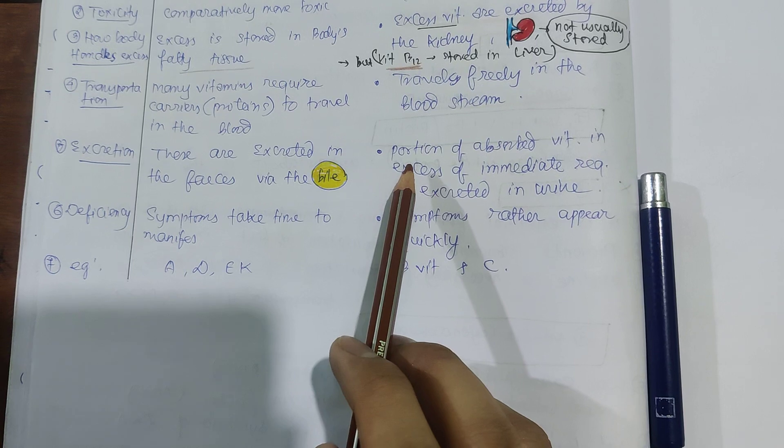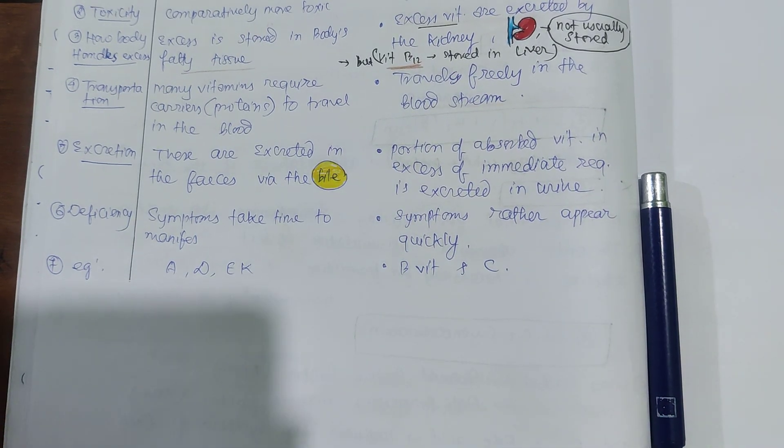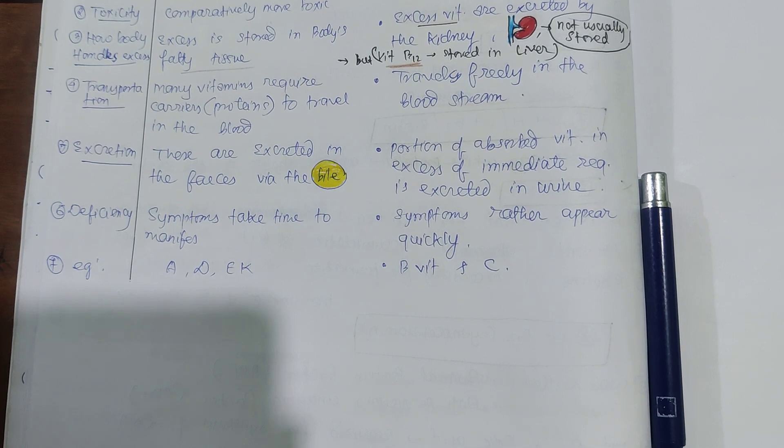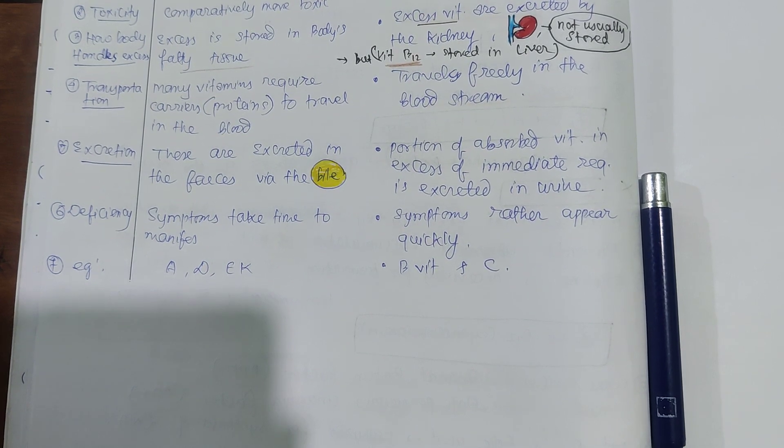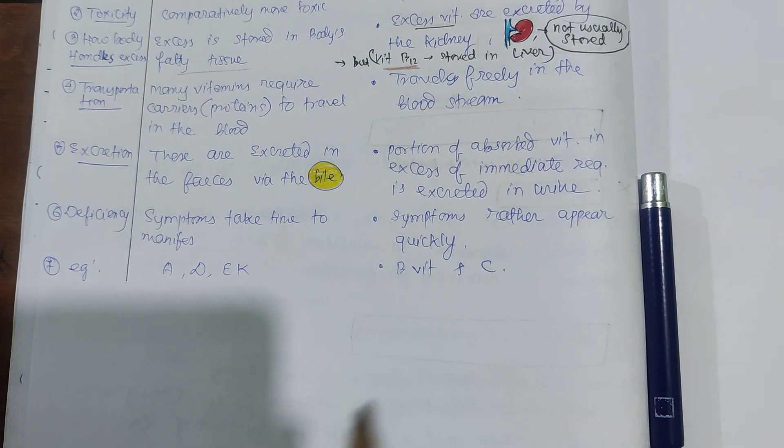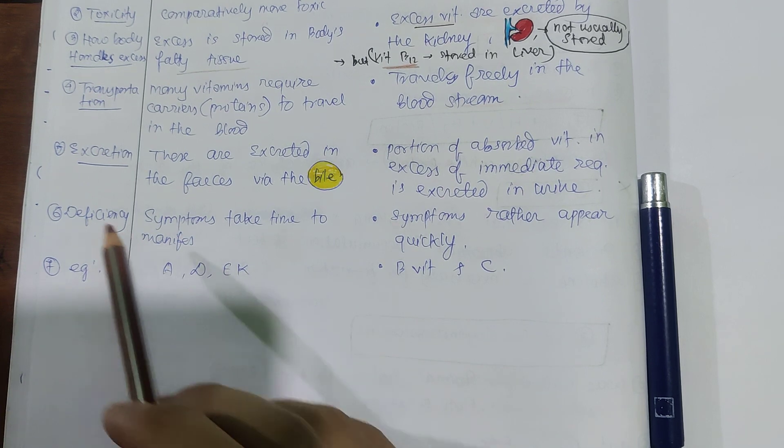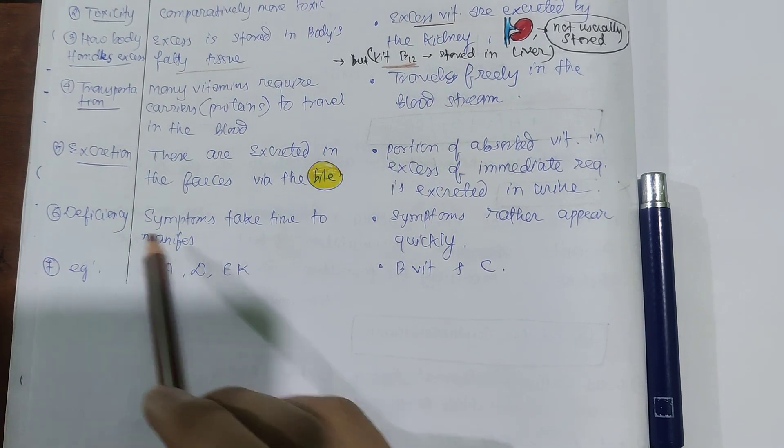For water-soluble vitamins, the portion of vitamins absorbed in excess of immediate requirements is excreted in urine. But remember, vitamin B12 is usually stored in the liver.